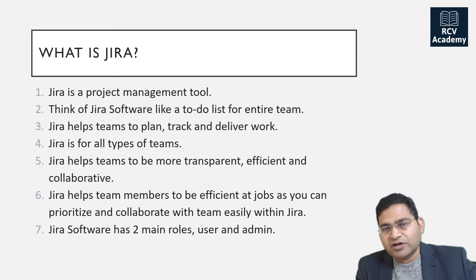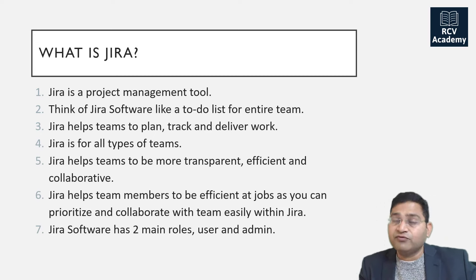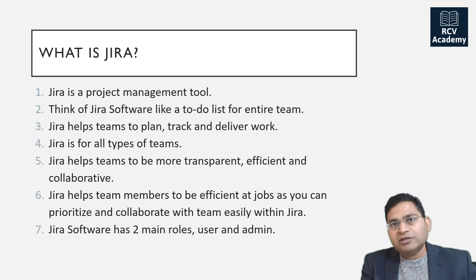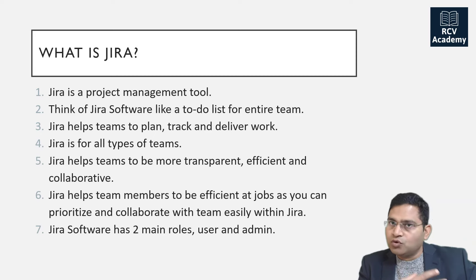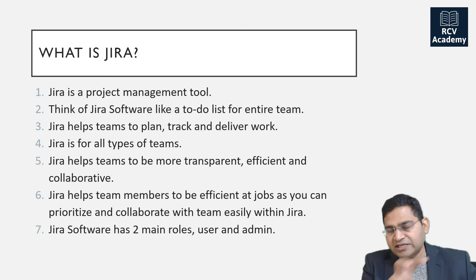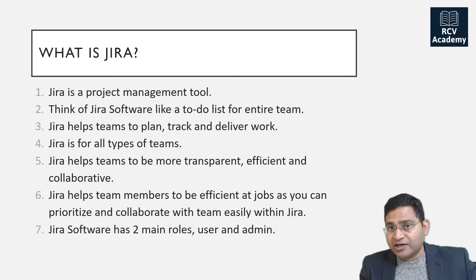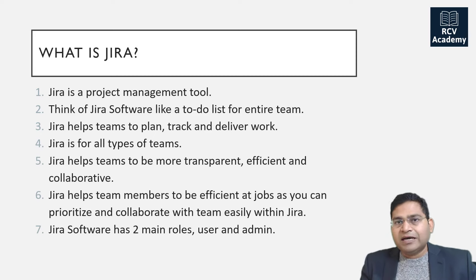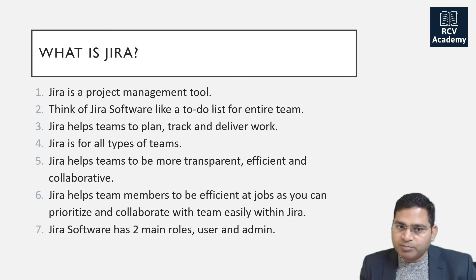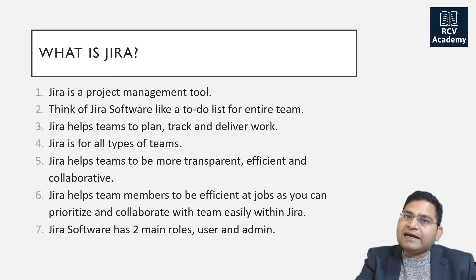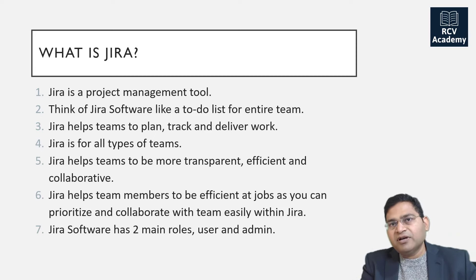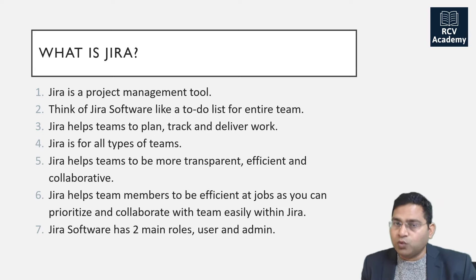Teams can then go ahead — say for example, an organization has the vision to release a mobile application for their banking. That's the organization-level to-do list. They can have initiatives, and those initiatives are broken down into features. Features are allocated to different teams — for example, Android team and iOS team — and within those there'll be multiple teams building it. Jira will help at any level: to plan first, then track, and then deliver the overall work.